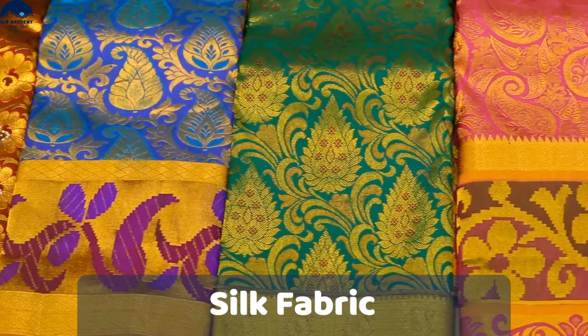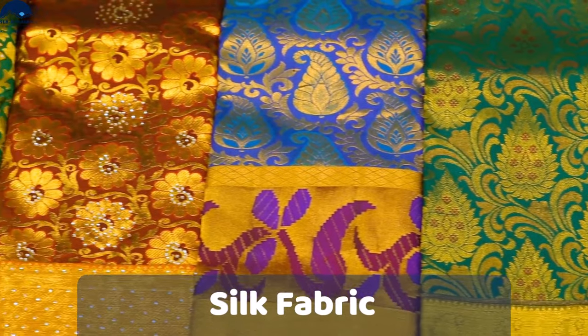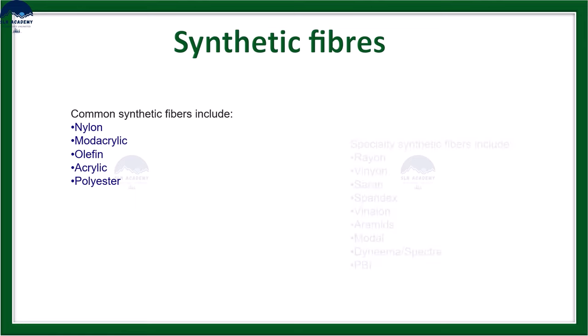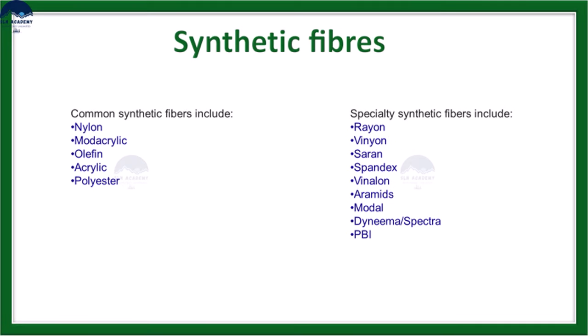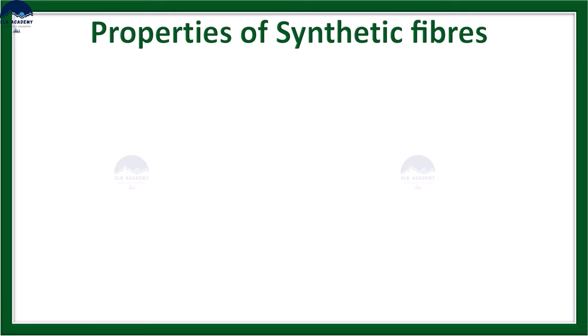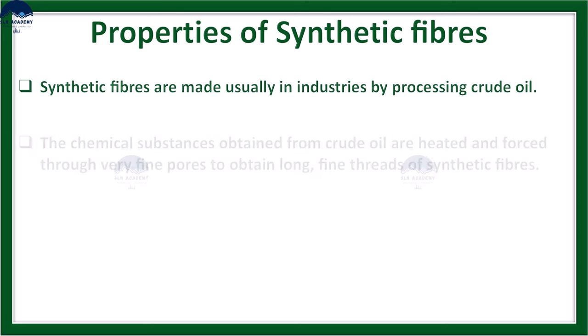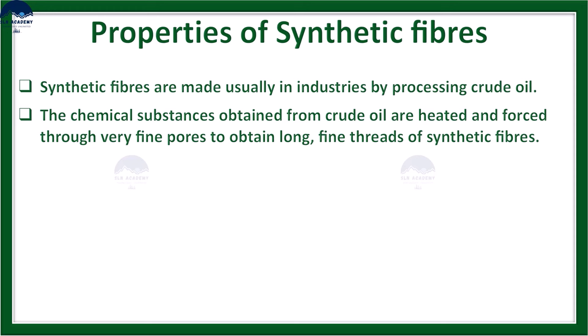The silk yarns are then converted into silk fabric. Synthetic fibers: these are fibers made by humans through chemical synthesis — for example, nylon, polyester, and rayon. Synthetic fibers are usually made in industries by processing crude oil. The chemical substances obtained from crude oil are heated and forced through very fine pores to obtain long, fine threads of synthetic fibers.